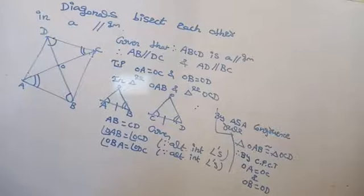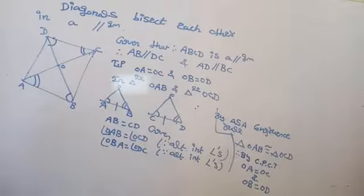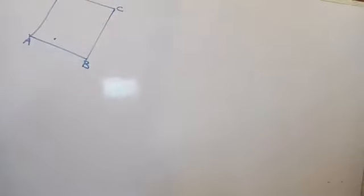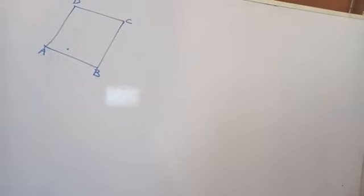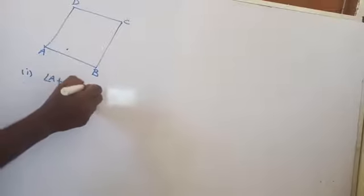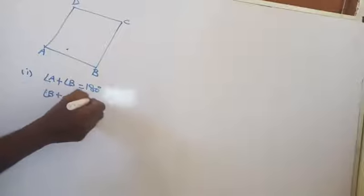The next property: in a parallelogram, adjacent angles are supplementary. We are trying to say that angle A plus angle B is equal to 180 degrees. AB is parallel to DC, and AD is a transversal.